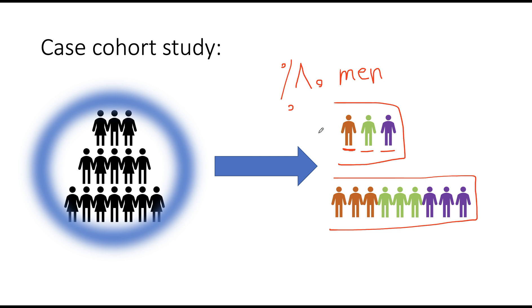That's exactly what case-cohort and nested case-control studies are, and those are their key differences. These two studies are very effective — much more time-saving than classical cohort studies, which are long-lasting, need large samples, and require extensive follow-up. These studies are much more efficient in terms of time and cost. Remember that both types are case-control studies, not cohort studies, but they do share some features with cohort studies.